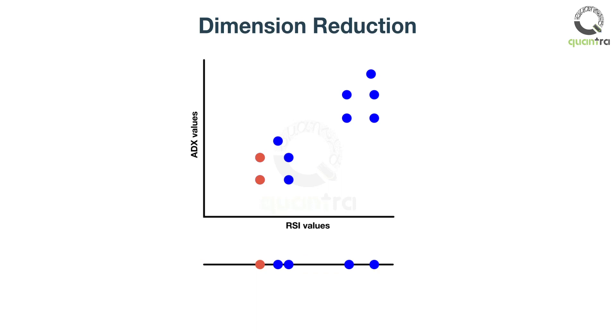Similarly, if only ADX was kept, the points highlighted in green will come together. This results in a loss of information too.